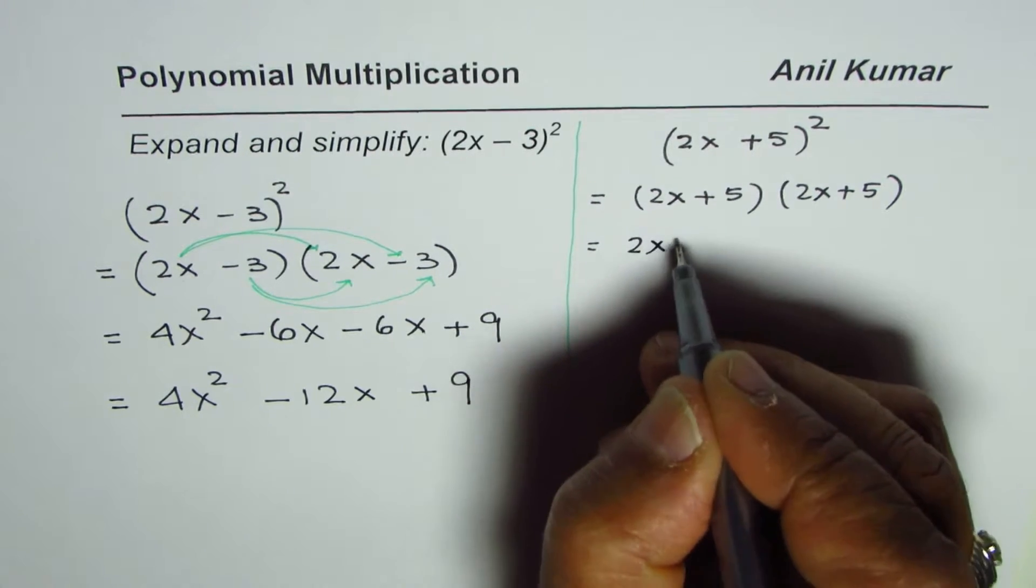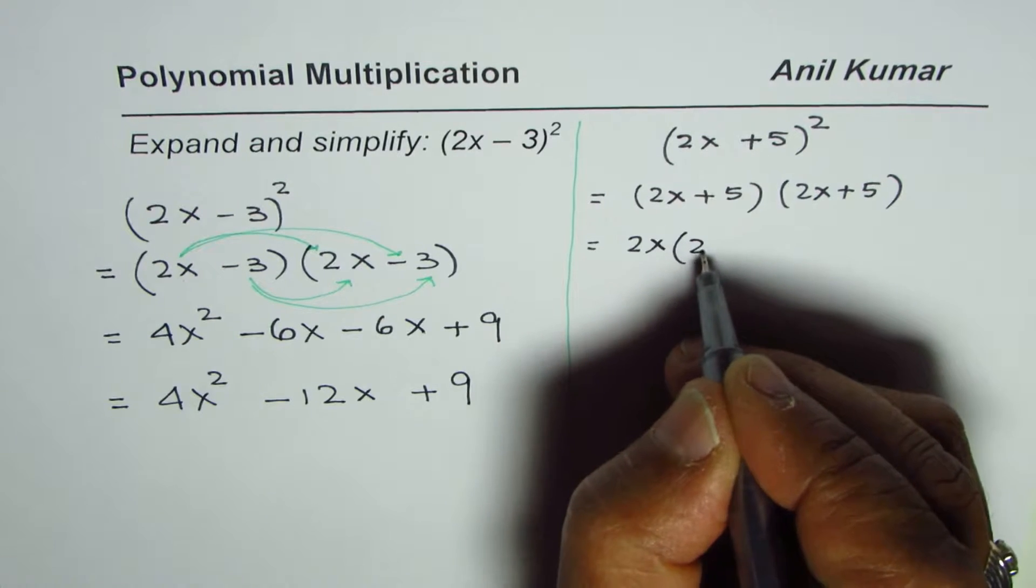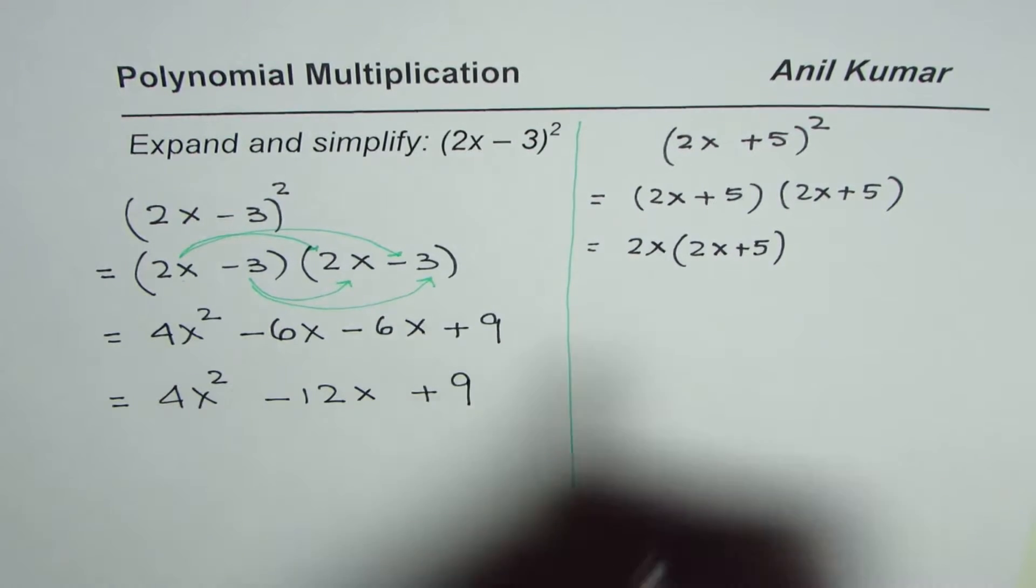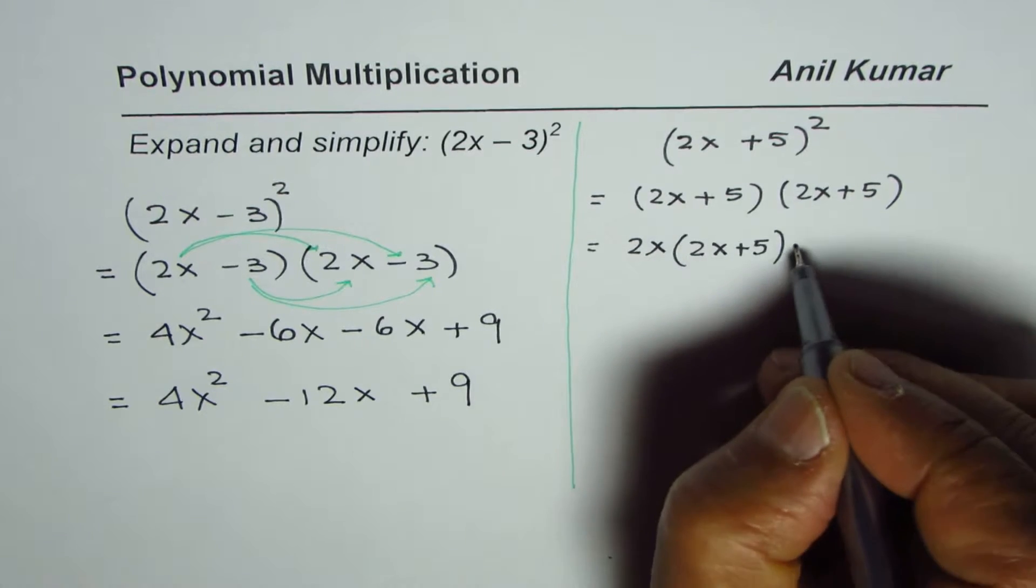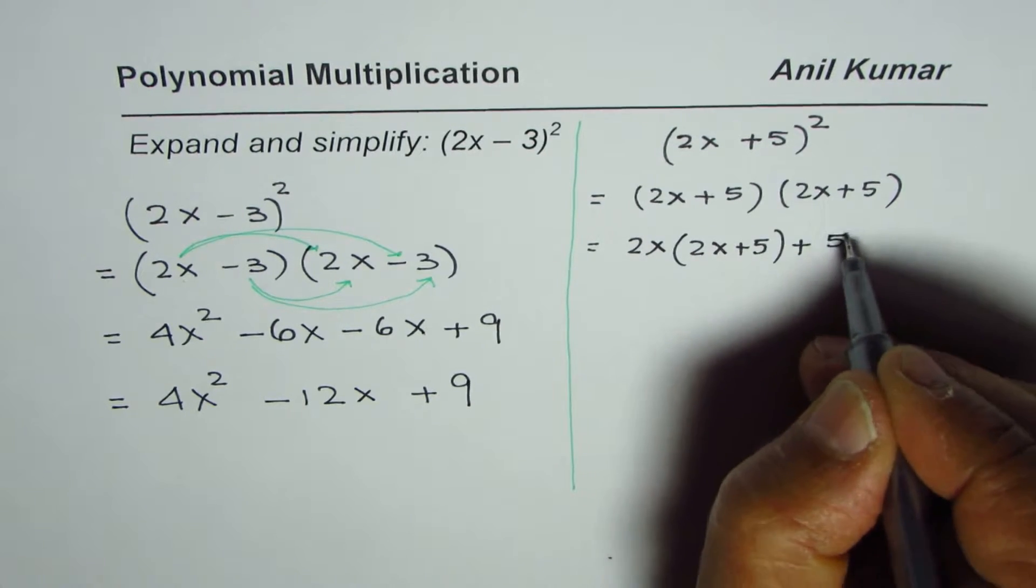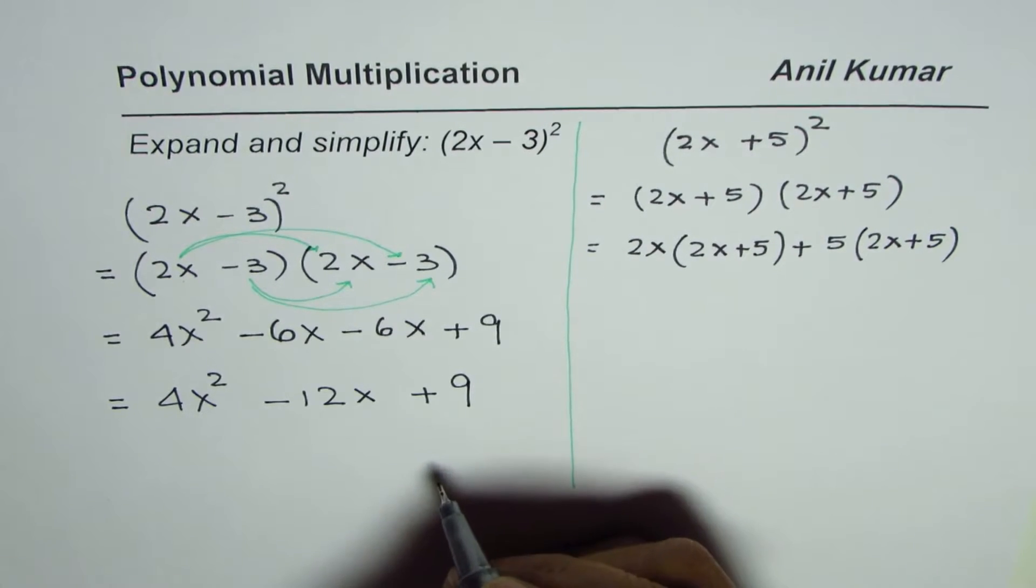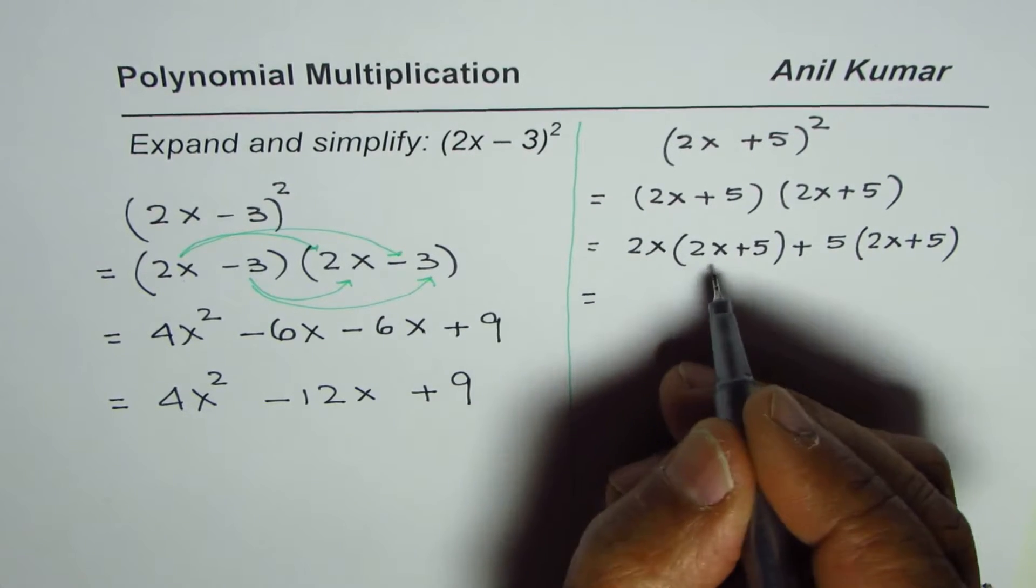That is to say, first you multiply by 2x, both these terms, 2x + 5. So I'm kind of elaborating on this. And then you multiply by 5, both these terms, 2x + 5. That is what it means. Then you need to expand.